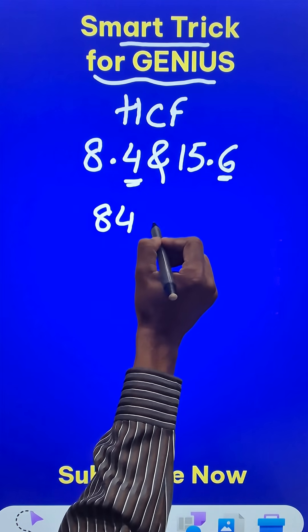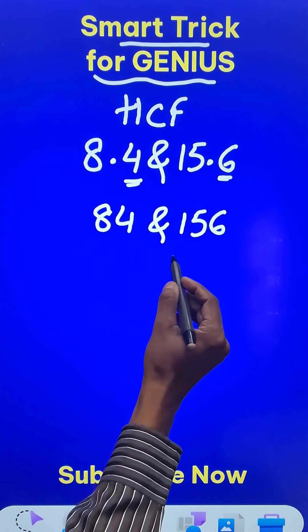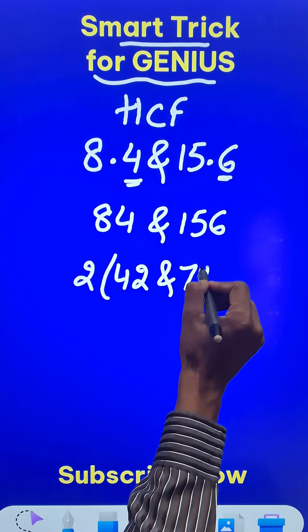So you have 84 and the other number is 156. As you can see, both of these are even numbers. When you divide them by 2, you get 42 and 78.